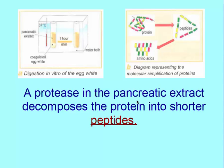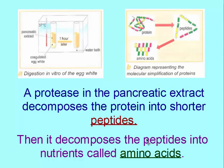We can say that a protease found in the pancreatic extract decomposes the protein into shorter peptides, then it decomposes the peptides into nutrients called amino acids. As we said earlier, digestion is a gradual process, so it happens step by step. We can't see that proteins are directly changed to amino acids. No, they are first changed to peptides and then the peptides are changed to amino acids.